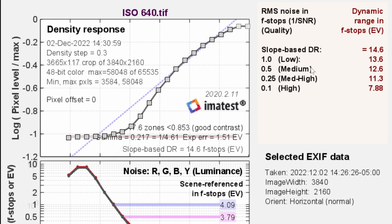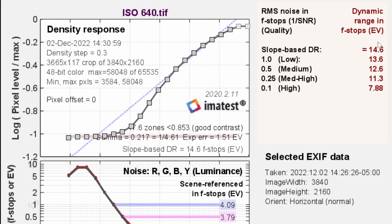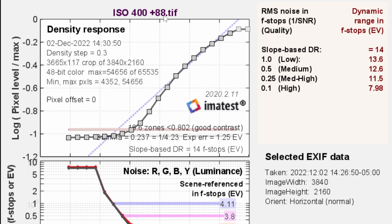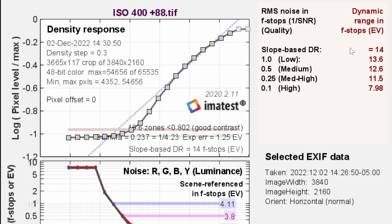These are varying qualities based on signal-to-noise ratio. Usually we look at something like medium, which is an SNR of two — 12.6 — so we get 12.6 clean stops, but the camera can see 14.6 total. Moving down to ISO 400, that plus 88 is the clipping point in camera — what you'd set your zebras to for maximum white. The total dynamic range dropped to 14 from 14.6, but the medium and low scores stayed the same at 12.6 for clean and 13.6 for pretty clean.